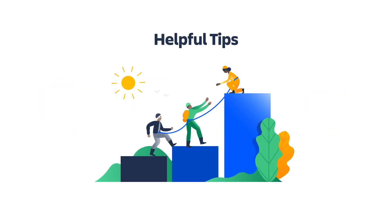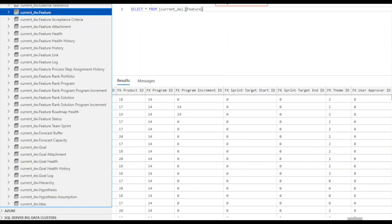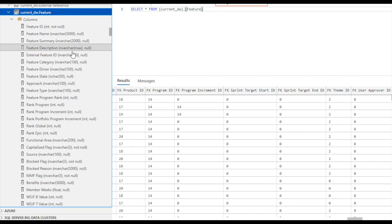In this next section, I will share some helpful tips when using Enterprise Insights. First, I'm going to talk about foreign keys in Enterprise Insights. A foreign key is an attribute in a database table that refers to a primary key in a master object table and is used to join the two tables. In Enterprise Insights, columns containing foreign keys are prefixed with FK in the column name.